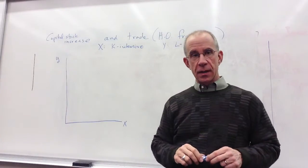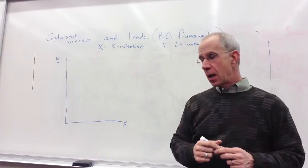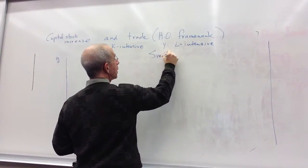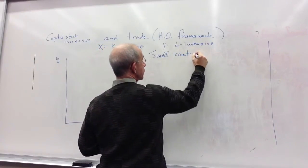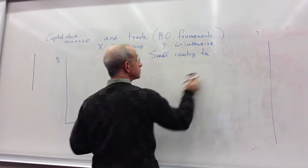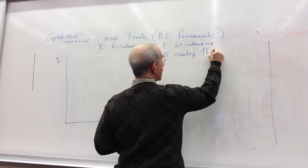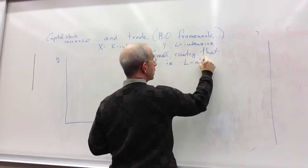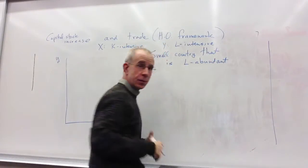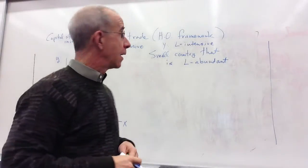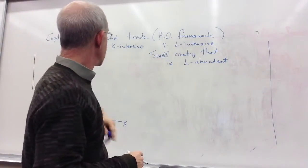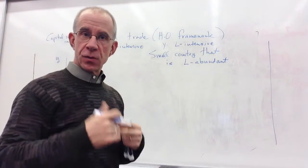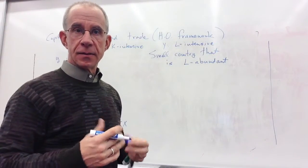In a separate video, we'll do a labor stock increase, but let's start first with capital. I want to do this with a small country that is labor abundant. This is the Heckscher-Ohlin framework, where we have standard expectations about Y being the labor-intensive good and X the capital-intensive good. This country is capital scarce but it's small, so it's going to take the world prices as given.